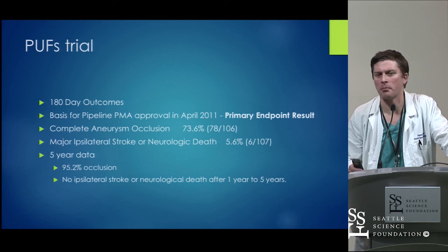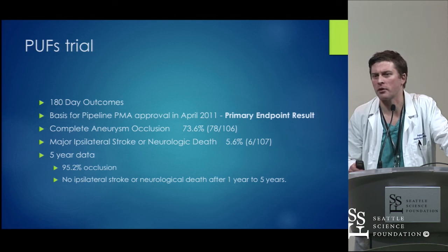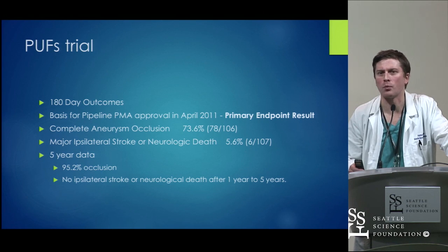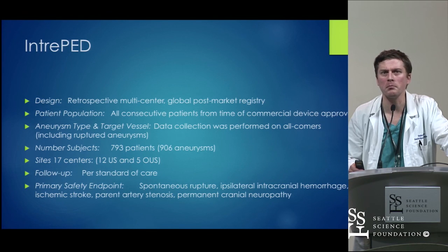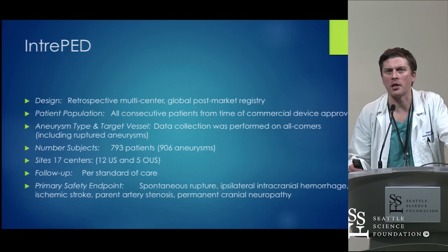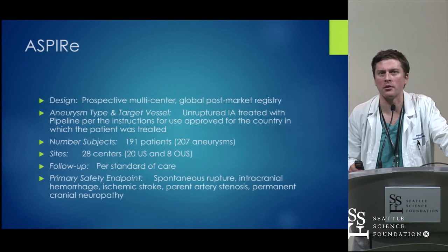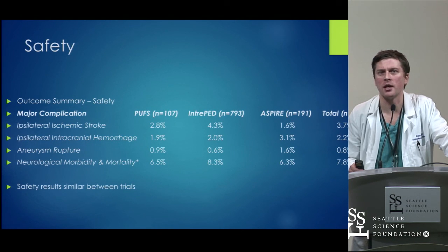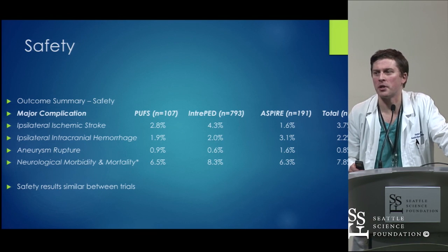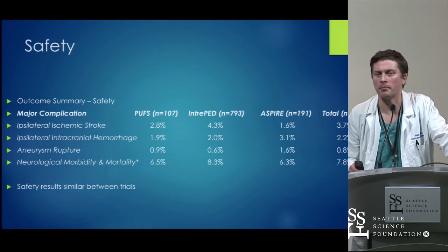The five-year data from PUFS is now out with a 95.2% occlusion rate. This is important — often patients get their Pipeline, we do a six-month angiogram, the aneurysm is smaller, and we're not sure whether to retreat. Now with the five-year data, in my practice I've been watching and waiting unless there's regrowth because often that small remnant will disappear. The INTREPID trial had 793 patients and the ASPIRE trial had 191 patients, with neurological morbidity and mortality relatively low at 7.8%, making it a good safe treatment for complex aneurysms.